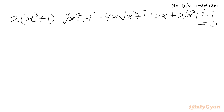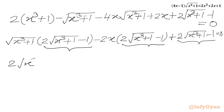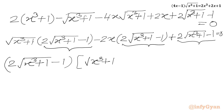From the first two terms of LHS, we will take √(x³ + 1) common out. Now we can take 2√(x³ + 1) - 1 common out from the left hand side. So we will be writing 2√(x³ + 1) - 1 in one bracket, and in the other bracket we write √(x³ + 1) - 2x + 1.